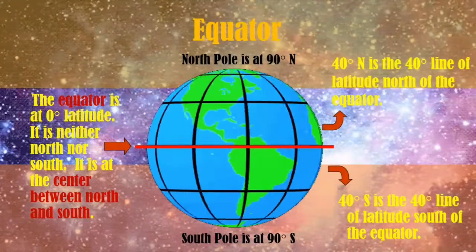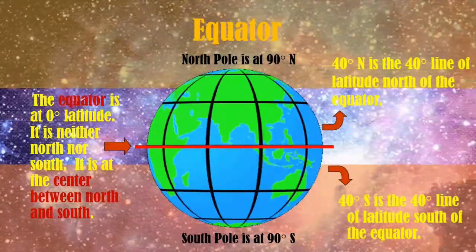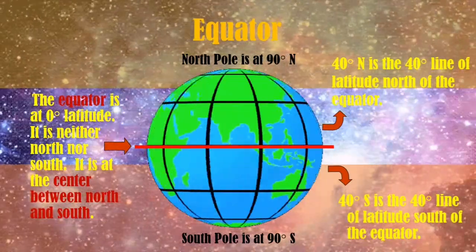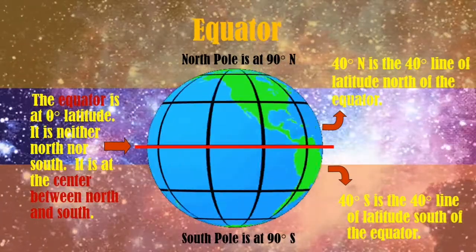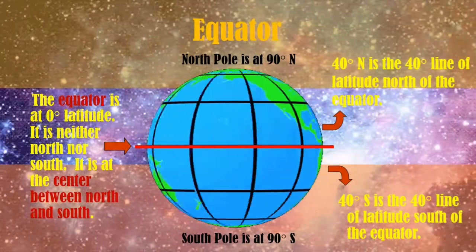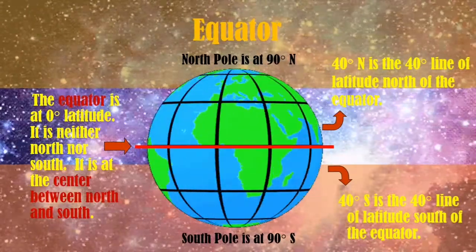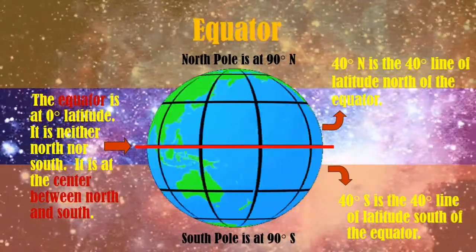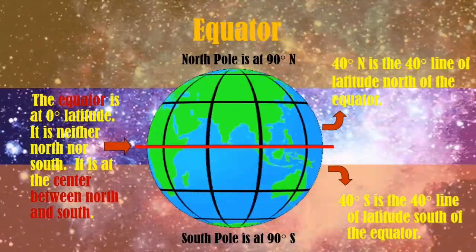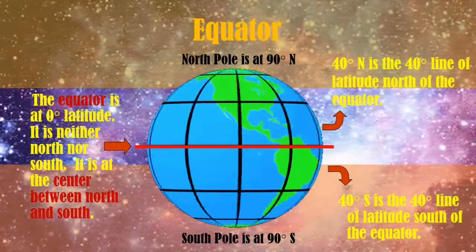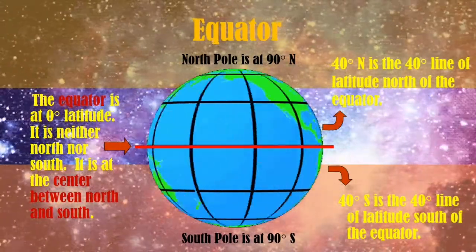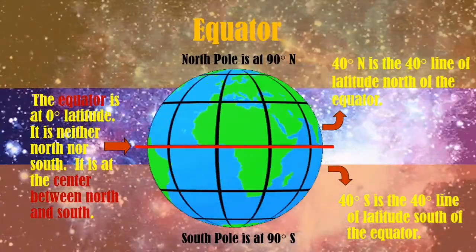It is at the center between the north and the south. As the earth is divided by the equator, 40 degrees north is the 40 degrees line of latitude north of the equator, while 40 degrees south is the 40 degrees line of latitude south of the equator.